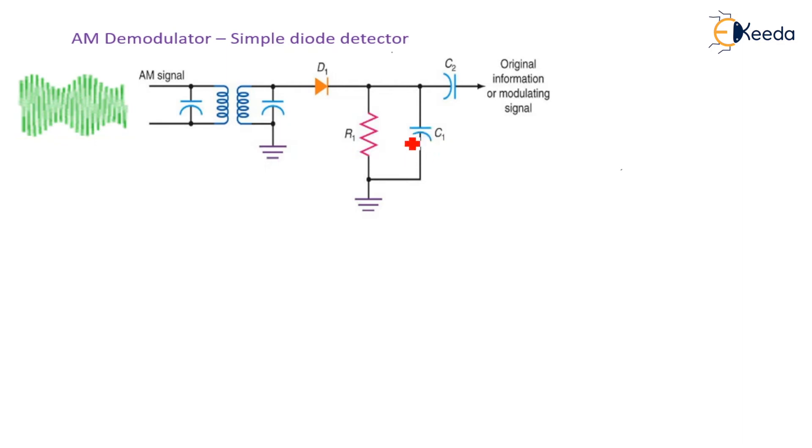The capacitor connected here provides very low impedance at the carrier frequency and a much higher impedance at the modulating frequency. As a result, the capacitor filters out the carrier, leaving the original modulating signal. So here, the original modulating signal is observed.